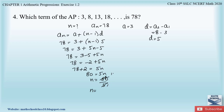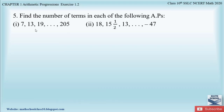So n equals 16... that is n equals 16. Therefore the 16th term of the AP is 78. Now let us move to question number five, which says: find the number of terms in each of the following APs.